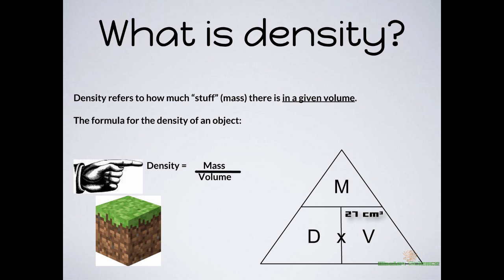Now we need to take the mass of this block. Let's say you put the block on a triple beam balance and it comes out to be 50 grams. At this point, all we have to do is look at our triangle. We are trying to figure out density, and we have figured out mass and volume. By looking at the triangle, you can see that M is above V, so you divide. 50 grams divided by 27 centimeters cubed comes out to a density of 1.85 grams per centimeters cubed. Make sure you always get your units correct, because that is something you could lose points on.